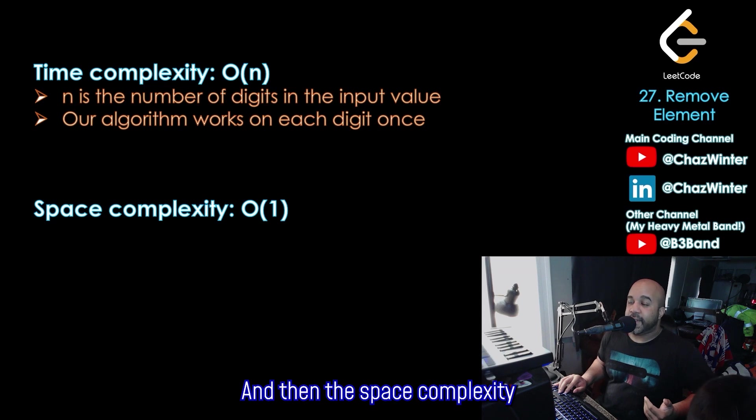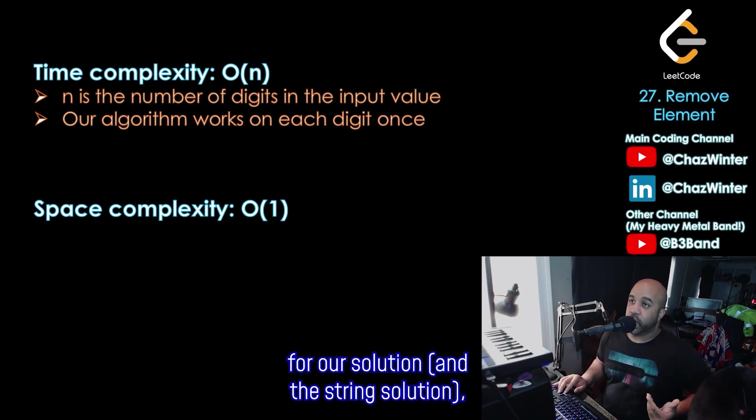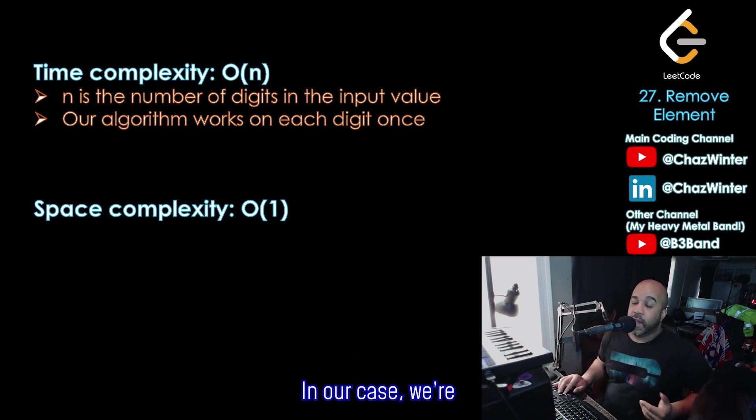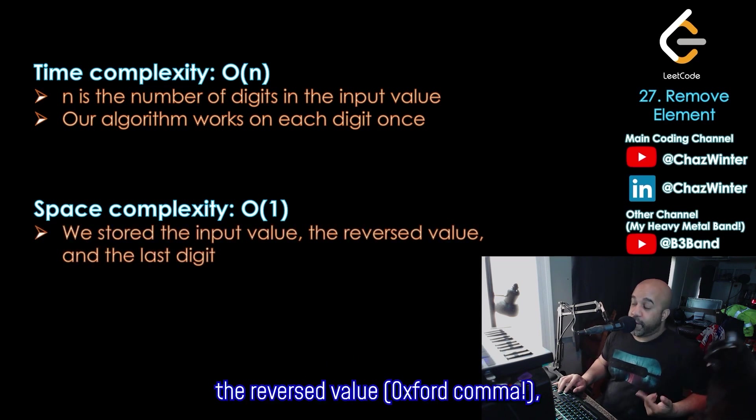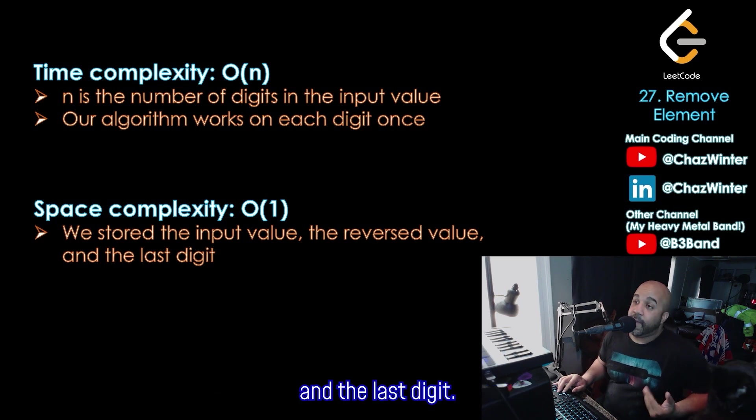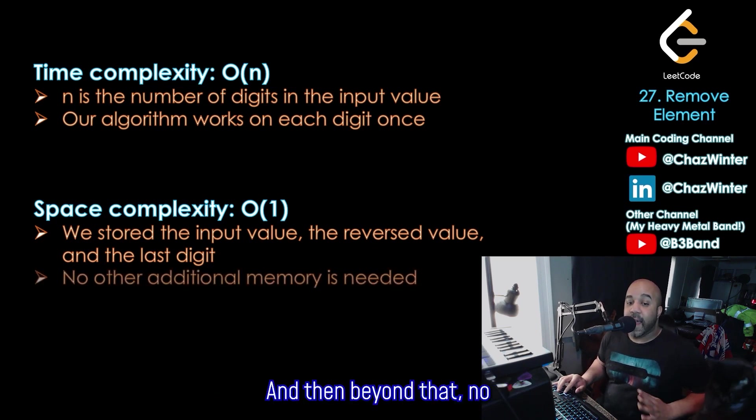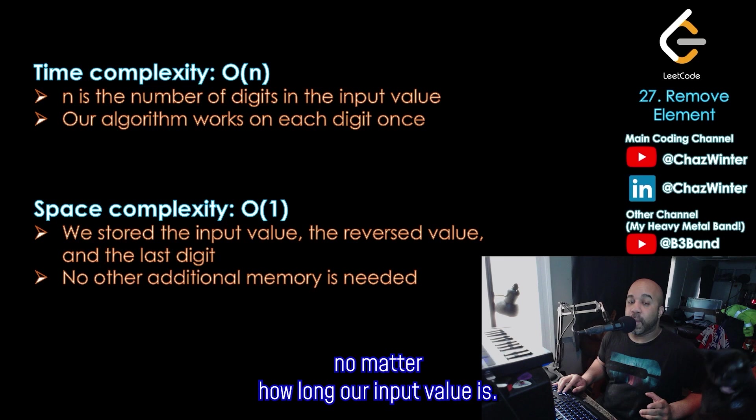And then the space complexity for our solution and the string solution, they're both big O of one or constant space. In our case, we're storing the input value, the reversed value, Oxford comma, and the last digit. And then beyond that, no other additional memory is needed, no matter how long our input value is.